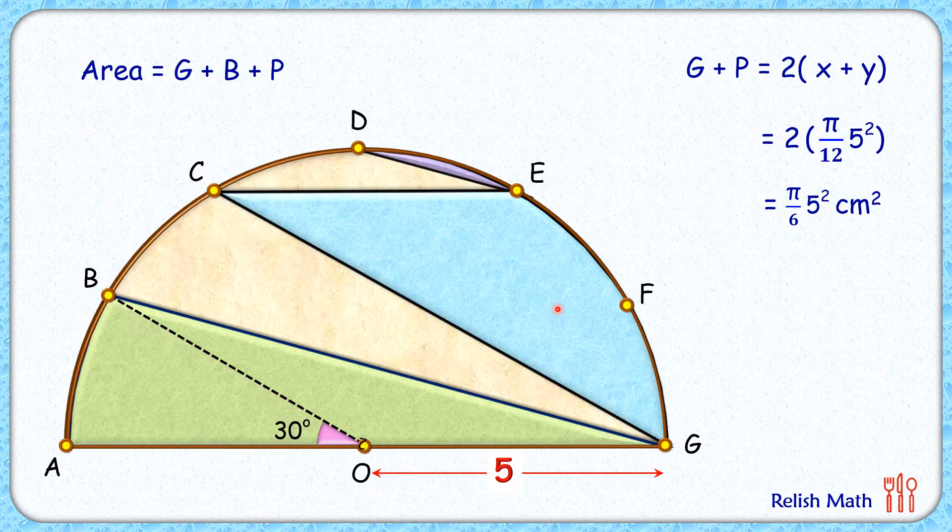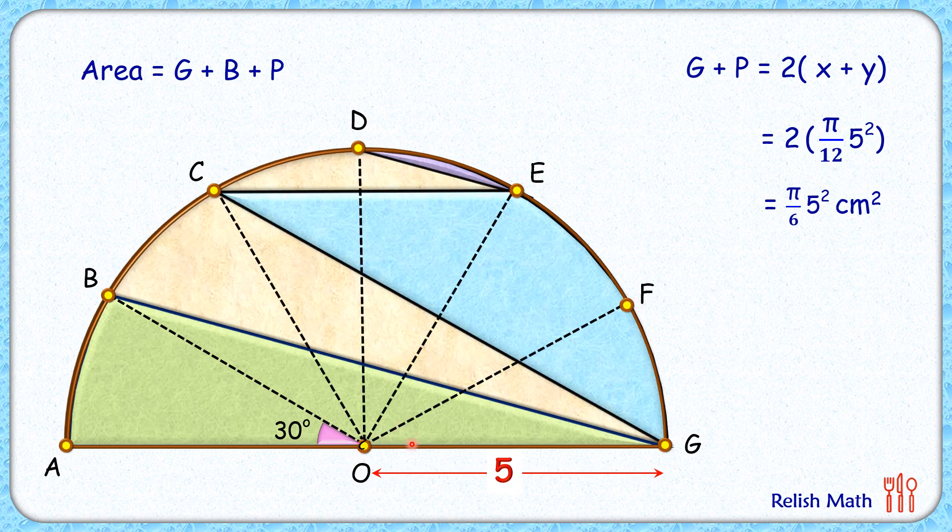Now what's left is to find this blue area to get the total area. Let's join the center to these points again. Each angle here is 30 degrees, so this combined angle will be 60 degrees, and this will be 60 degrees.